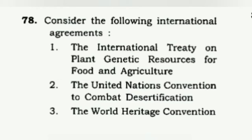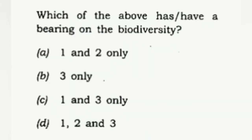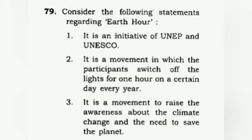The 78th question asks us to consider the following international agreements: the International Treaty on Plant Genetic Resources, the United Nations Convention, and the World Heritage Convention. We need to know which ones have a bearing on biodiversity. The answer is D: one, two, and three — all are correct, as all of these agreements are relevant to biodiversity.